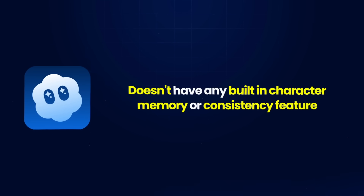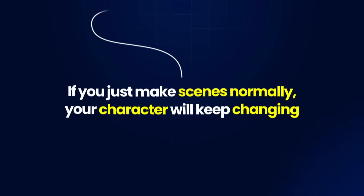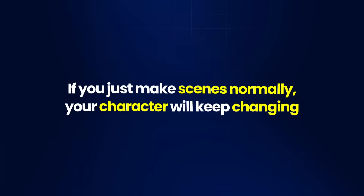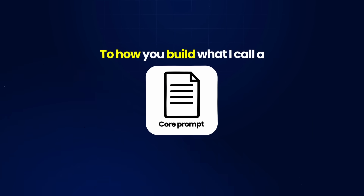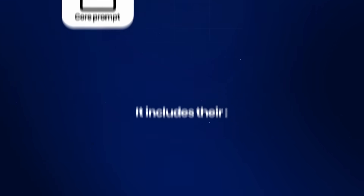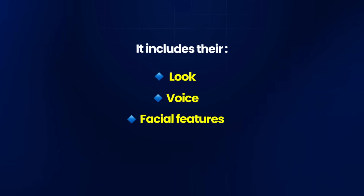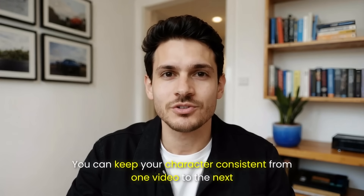Before we get started, there's something important to mention. Sora 2 doesn't have any built-in character memory or consistency feature. If you just make scenes normally, your character will keep changing. But I figured out a way around this, and it all comes down to how you build what I call a core prompt. A core prompt is like the DNA of your character — it includes their look, voice, facial features, and other details. By using the same core prompt across different scenes, you can keep your character consistent from one video to the next.